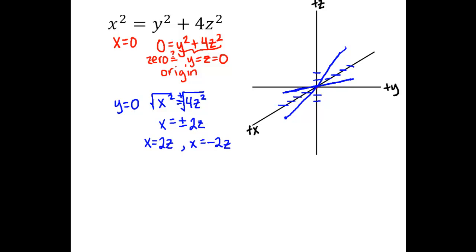Let's do one more cross-section. When I plug in z = 0, we get x² = y², which is again a degenerate hyperbola with infinitely many solutions. Solving for x gives x = ±y — really two lines: x = y and x = -y.